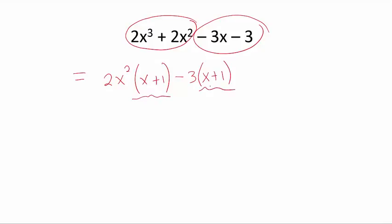Yes, now we have a common factor from those terms that we can pull out. From the first term, 2x squared remains, and from the second term, 3.